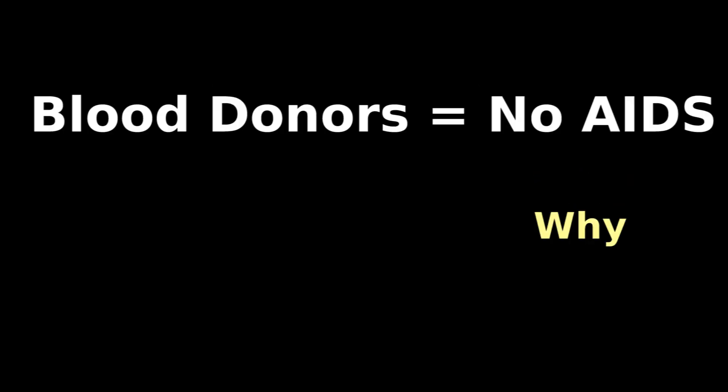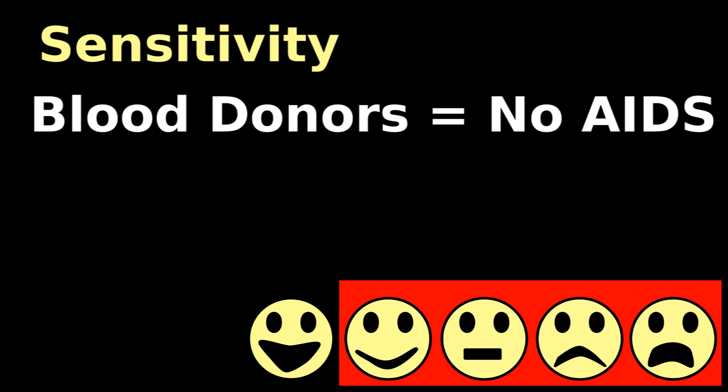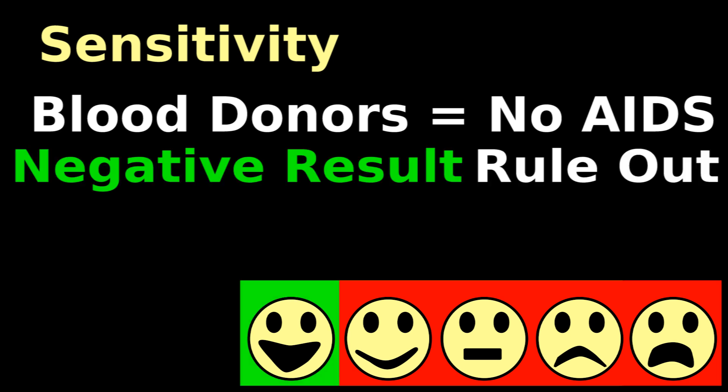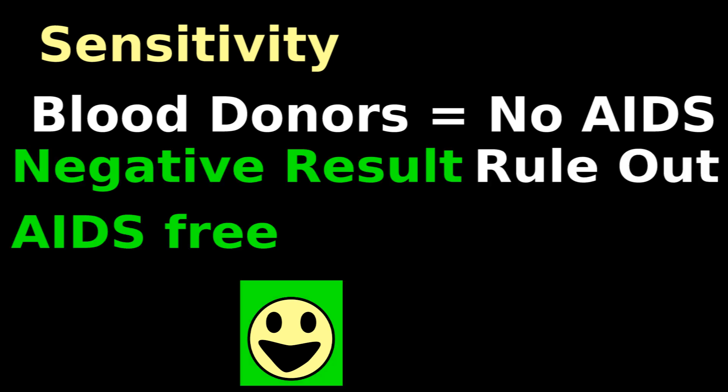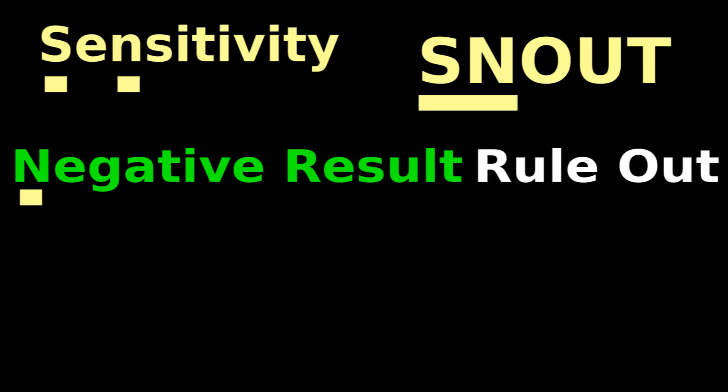You want to make sure blood donors don't have AIDS, so you use a sensitive test. If the test is negative, you can rule out AIDS. You're pretty sure he's AIDS-free, so you take his blood to the bank. Snout: Sensitive Negative results Rule out.